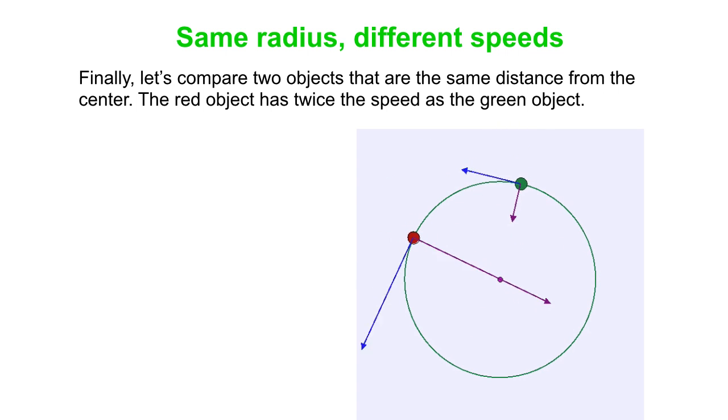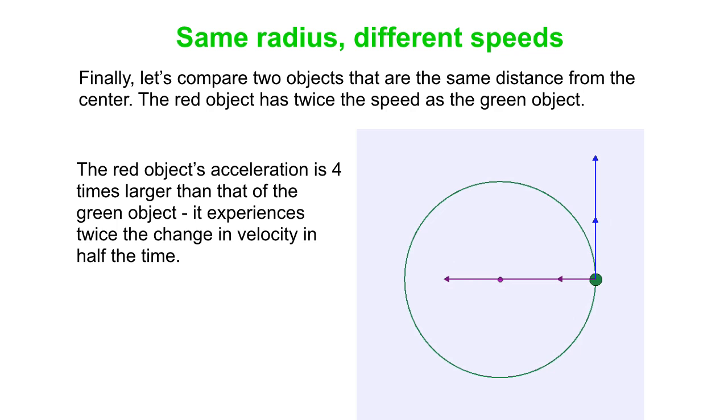One other example, same radius, but speeds differ by a factor of 2. The accelerations differ by a factor of 4 in that case, and again, that's because of V squared over r. Same radius, but one speed is twice as big as the other. You square that to a factor of 4.